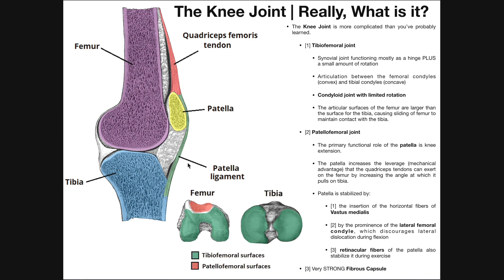The patellar ligament is this specific part down here. Sometimes this quadriceps tendon is referred to as the patellar tendon, so the patellar tendon is different from the patellar ligament, even though sometimes they're used interchangeably. The reason there's a difference is the definition of tendon versus ligament. A ligament connects bone to bone — the patella is a sesamoid bone and the tibial tuberosity is bone, so the part that connects them is by definition a ligament: the patellar ligament.